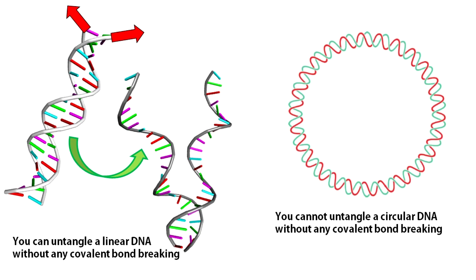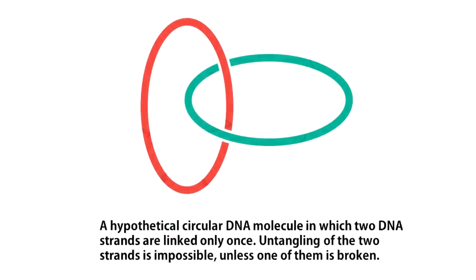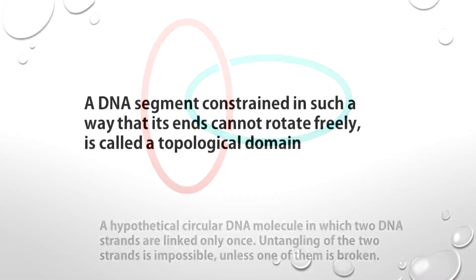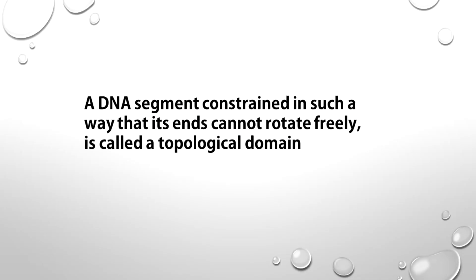Without breaking the phosphodiester bonds, you simply cannot completely separate the two strands. Remember that for all natural DNAs this scenario is true — the rotation of their free ends is either restricted or completely forbidden. This means untangling the two strands of all biological DNA is topologically impossible. A DNA segment constrained in such a way that its ends cannot rotate freely is called a topological domain.